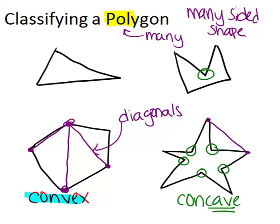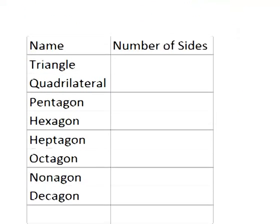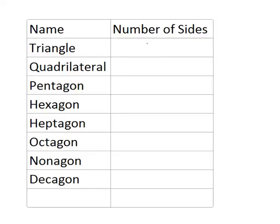We can also classify polygons beyond just convex and concave based on their number of sides. If you know the number of sides, you can name it. A triangle has three sides, a quadrilateral four sides, and as we go on, we keep adding a side each time. So a pentagon has five, a hexagon six, heptagon seven, octagon eight, nonagon nine, and decagon ten.